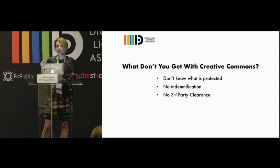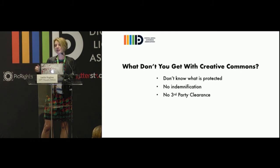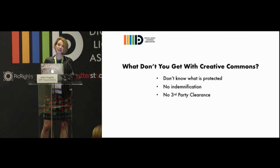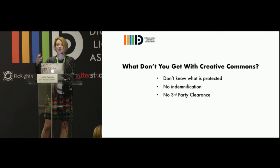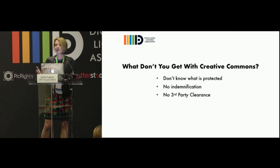With Creative Commons licenses, when someone uploads content and puts a license on it, there's no way to verify that the person uploading is actually the owner and authorized to grant that license. It's a licensing system that requires trust. You also get no indemnification as you would with traditional image libraries, and there are no third-party clearances — so you may get a copyright license but not permission for recognizable people, art, outdoor sculpture, graffiti, or other highly identifiable properties in the image.